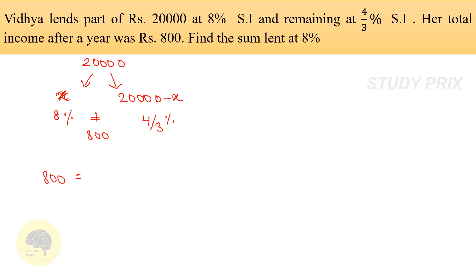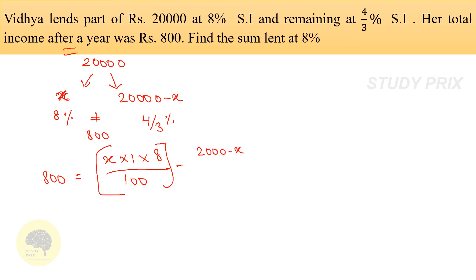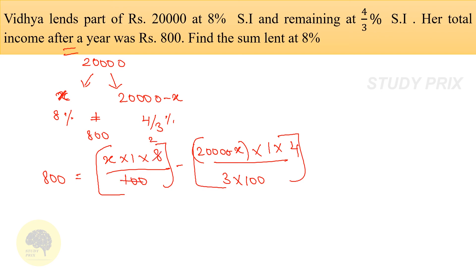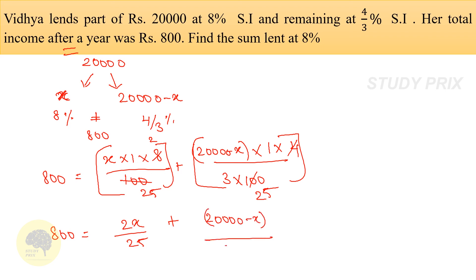So 800 = SI of first part + SI of second part. SI of first part = X × 1 × 8/100 = 2X/25. SI of second part = (20,000 − X) × 1 × (4/3)/100 = (20,000 − X)/75. Therefore: 800 = 2X/25 + (20,000 − X)/75.